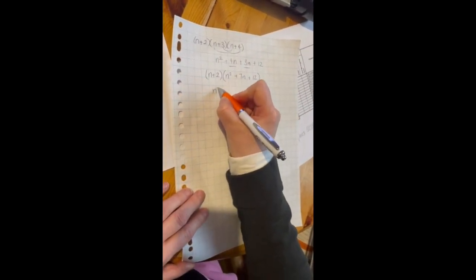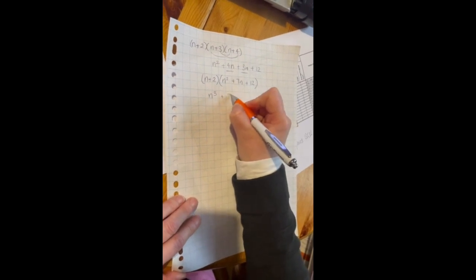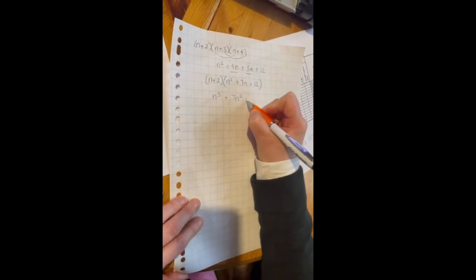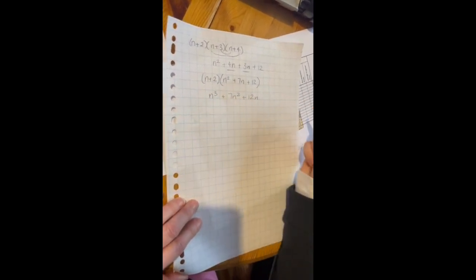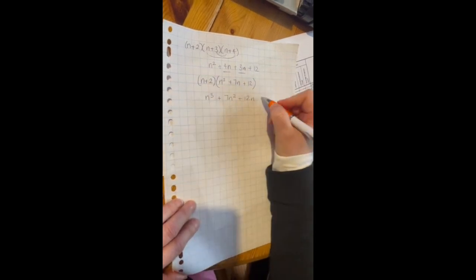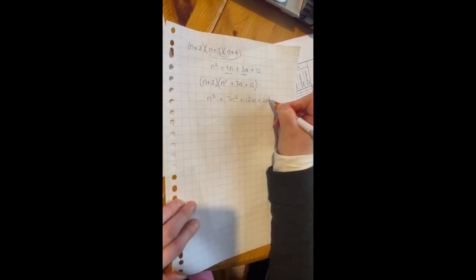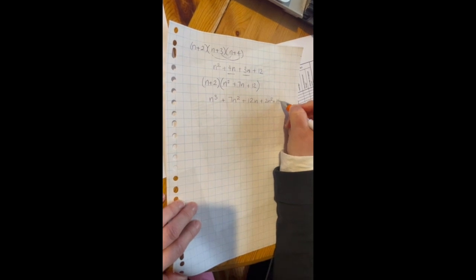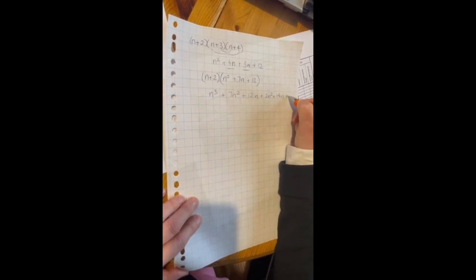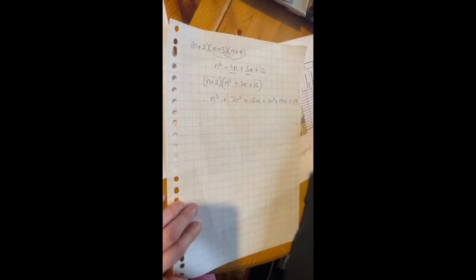So I'll do the n first. I get n cubed plus 7n squared plus 12n. Then I do the 2. I get plus 2n squared plus 14n plus 24. Hopefully I'm right with the maths.